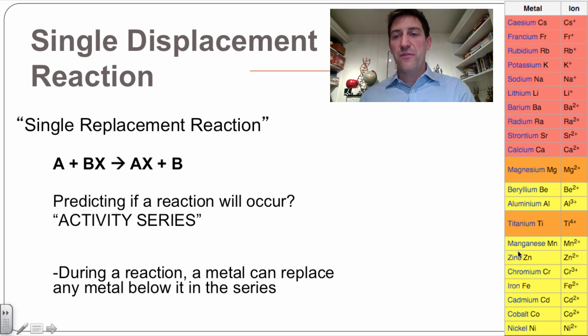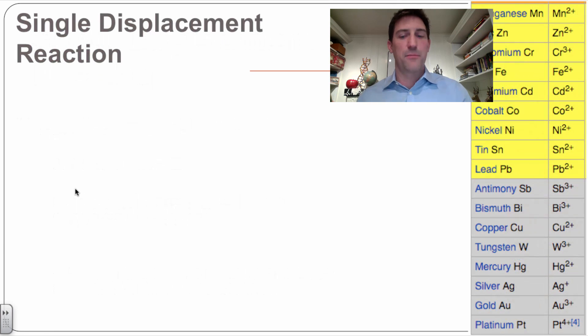In other words, if A over here was cesium, which is at the top, it can definitely go over here and break any other metal off that was B. So if cesium was all by itself, it could go over and break the lithium off of something else. Let me show you an example of that.